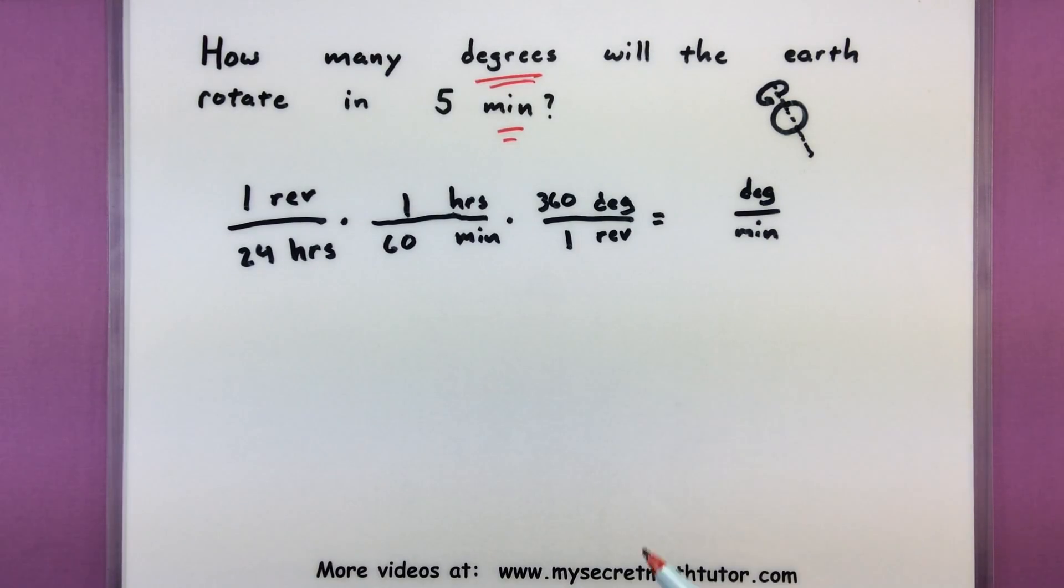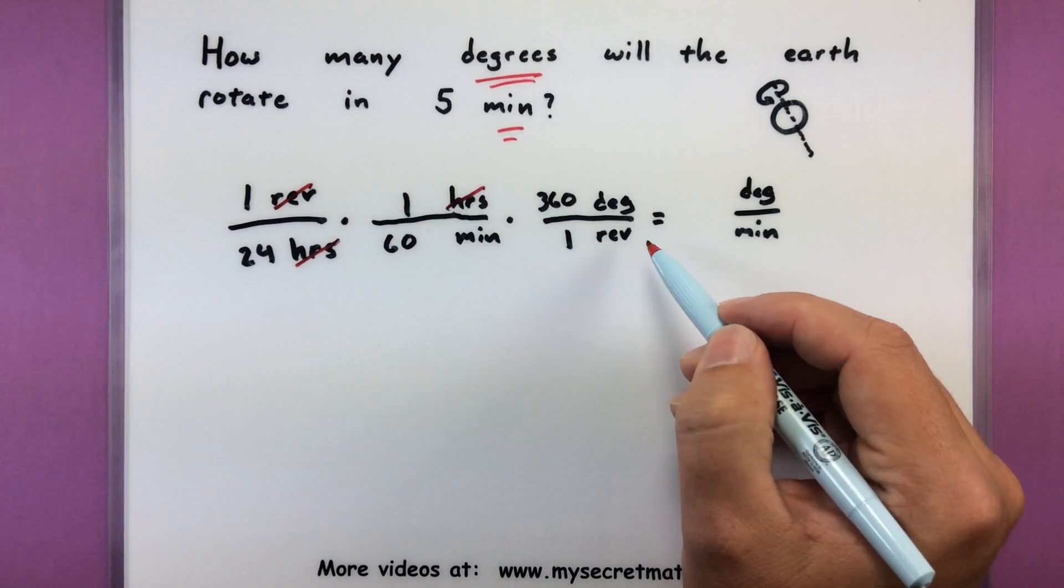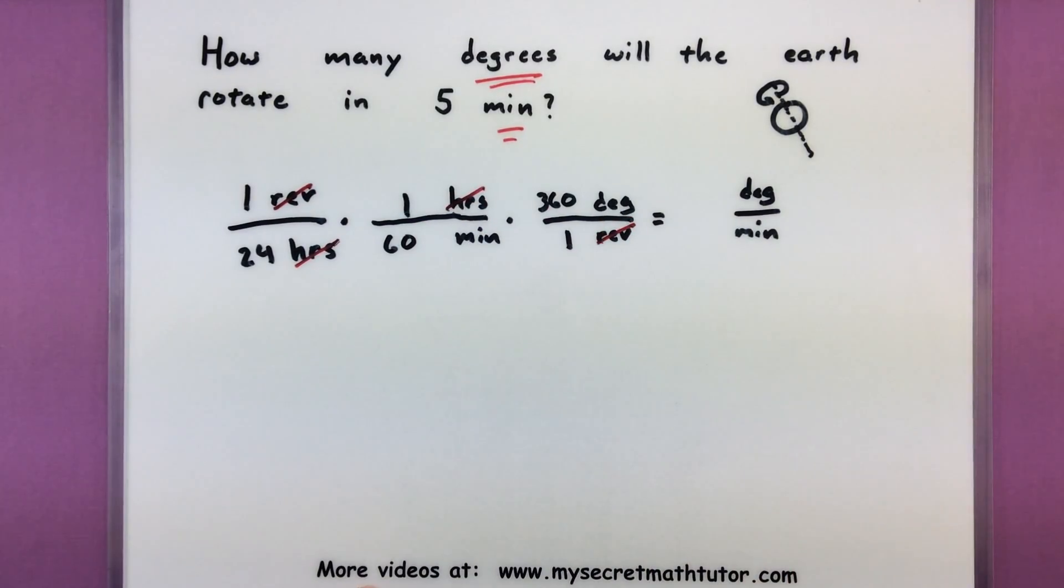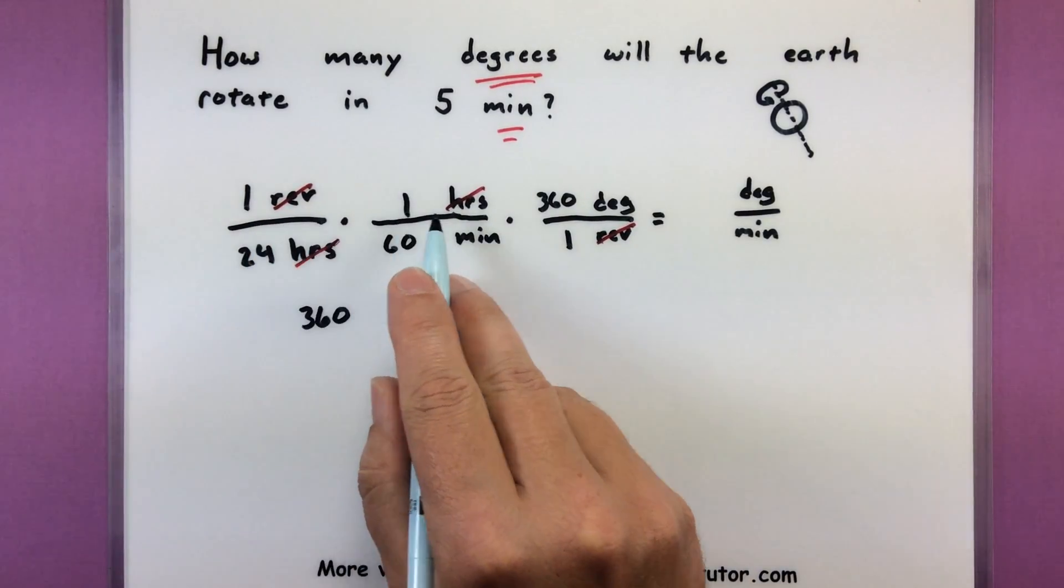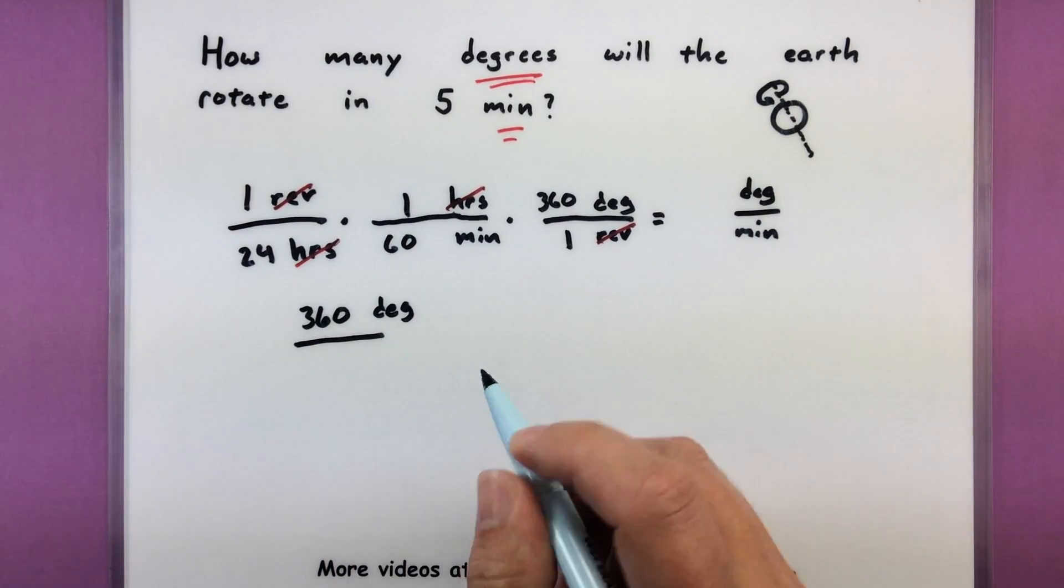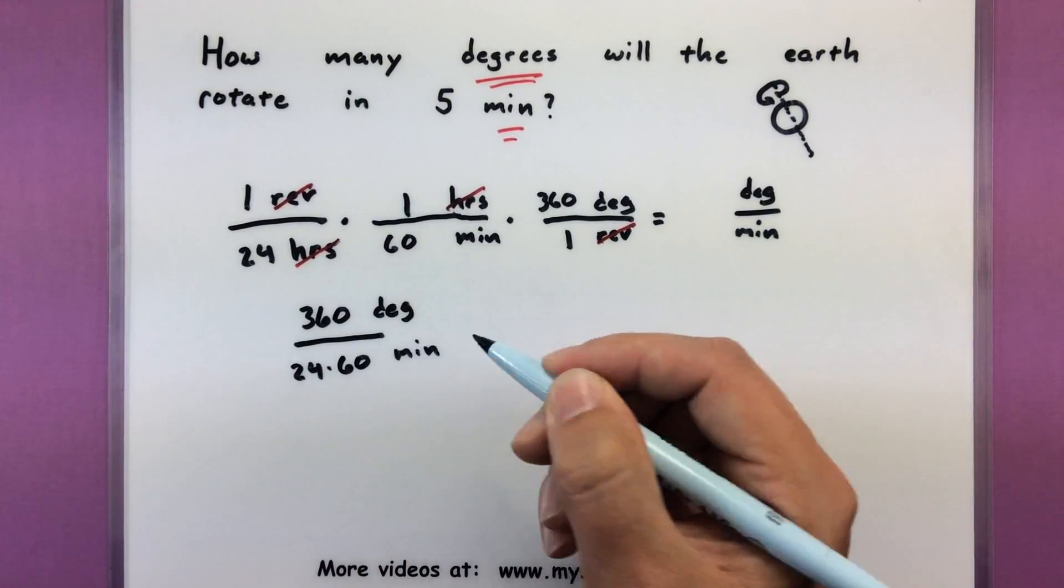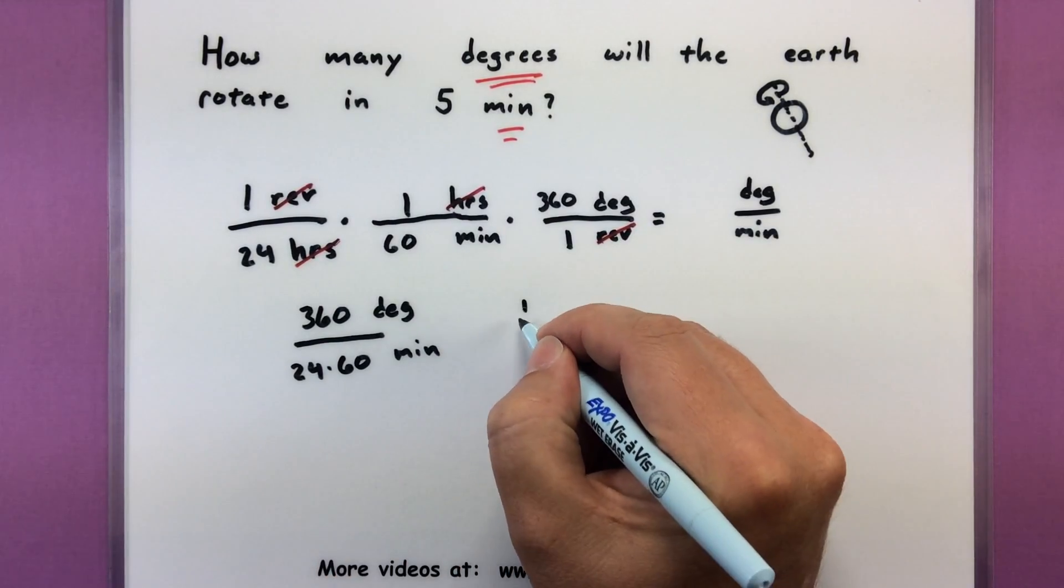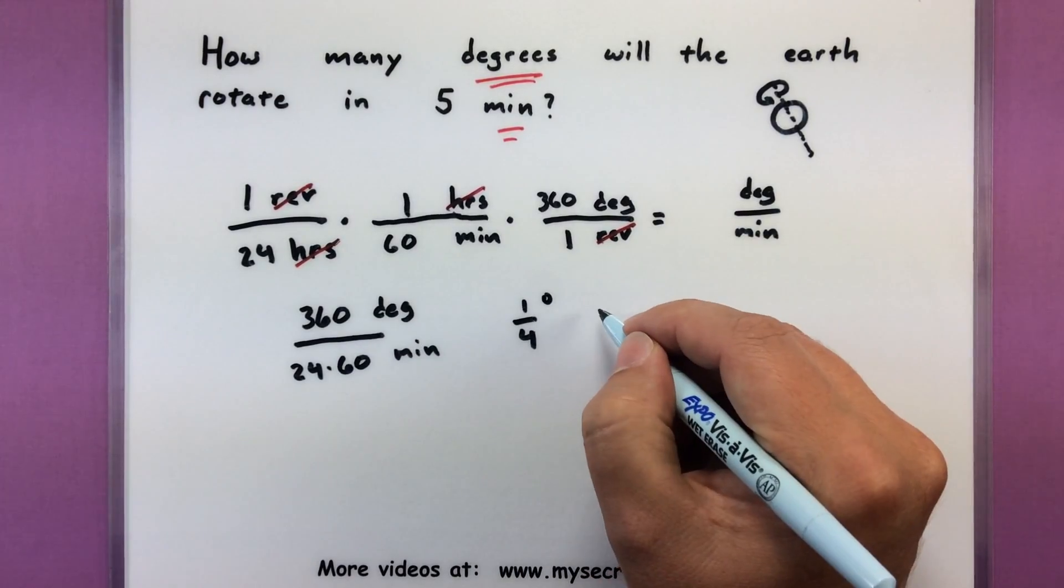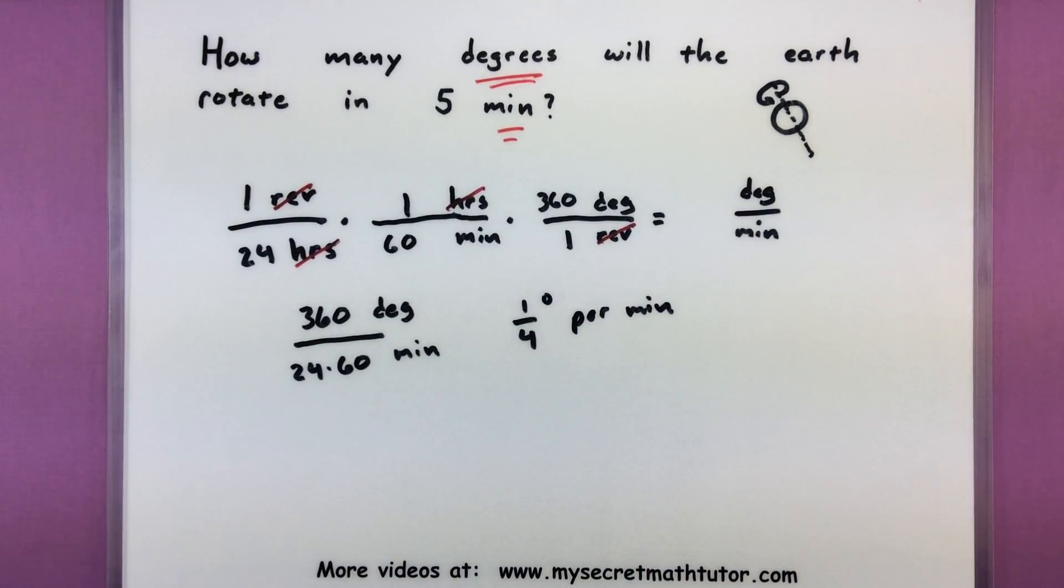Now let's see what cancels and what numbers survive so that we can finish our calculations. So these hours are gone. These revolutions are gone. And sure enough, I'm only left with degrees per minute. That's great. And let's see, what numbers do I have here? I have 360, that's the only number on top, degrees. All divided by 24 times 60 minutes. So again, I'll get my calculator out here and quickly punch those in. So I get that it rotates one fourth of a degree every single minute that we're on Earth.